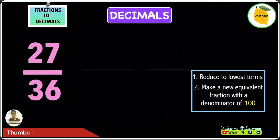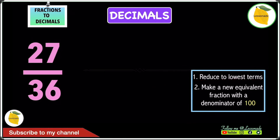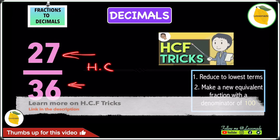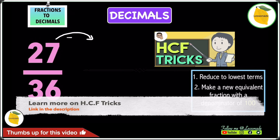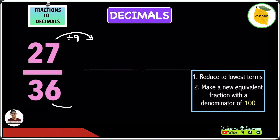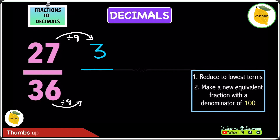Now let's have a look at converting this fraction into a decimal. To convert 27 over 36 into a decimal we're going to do the same two steps as in the previous example. Firstly we're going to reduce to the lowest terms. The highest common factor for both 27 and 36 is 9. So divide the numerator by 9 and also the denominator by 9. 27 divided by 9 gives you 3, and 36 divided by 9 gives you 4. So you get 3 over 4.